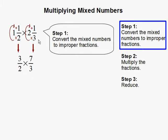And you do the same thing for any other mixed number. In this case, we have 3 times 2 is 6, plus 1 is 7. And 3, our denominator, remains the same.